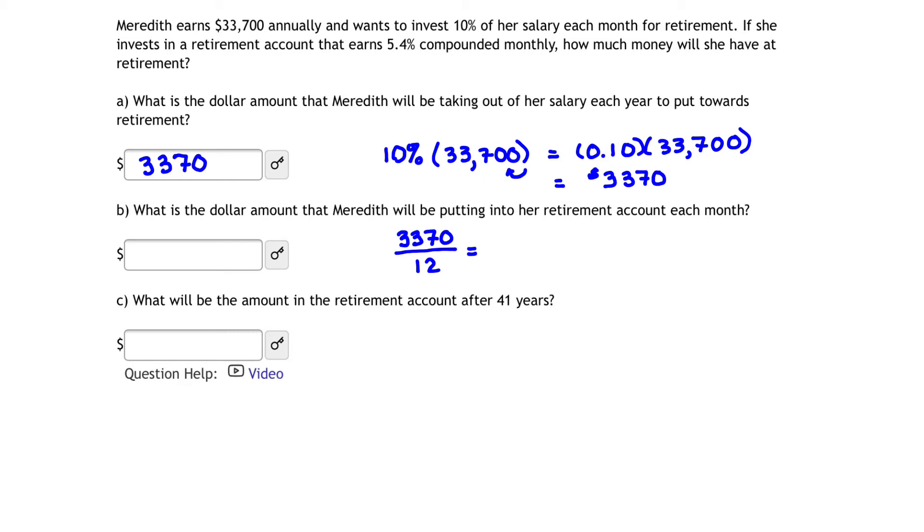If we take $3,370 divided by 12, that gives us $280.83 when we round to the nearest penny or the nearest hundredth. $280.83. And so that's the answer for B, $280.83.